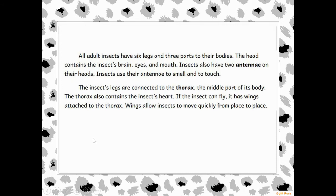All adult insects have six legs and three parts to their body — that's what makes it an insect. They have six legs, which means they're called hexapods because 'hexa' means six, and they have three parts to their bodies.